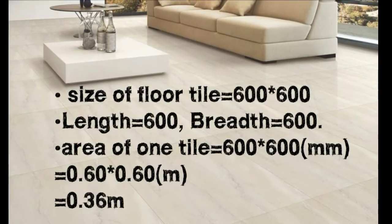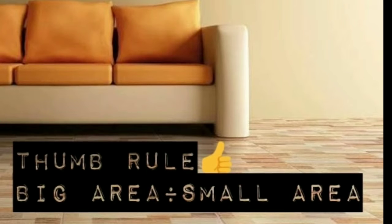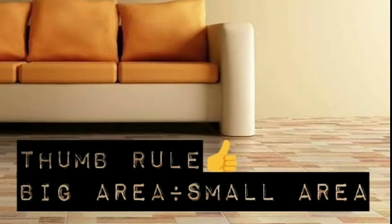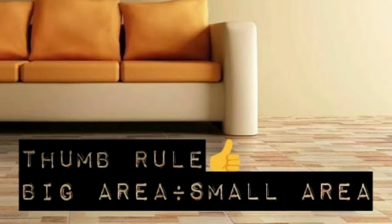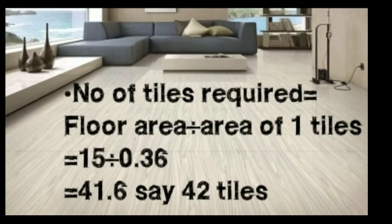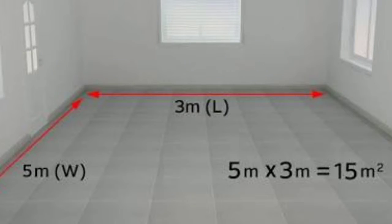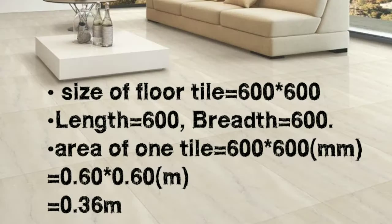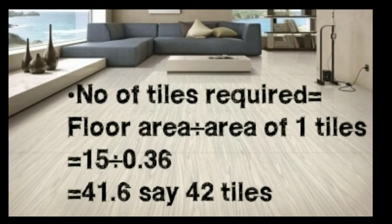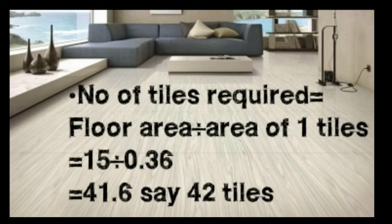You should remember this thumb rule — it is applicable everywhere: big area divided by small area. The big area is always the area of the room, and the small area is always the area of the tile. So number of tiles = floor area ÷ area of one tile = 15 ÷ 0.36 = 41.6, which rounds up to 42 tiles required for that particular room.